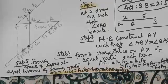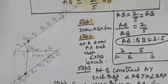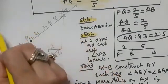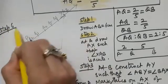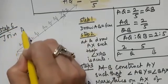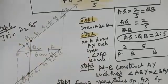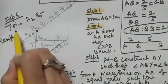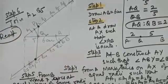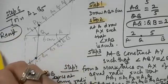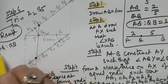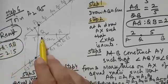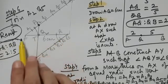Step 6: join A2 and B5 and locate the point Q. Result: Q is a point on AB such that AQ to QB is 2 to 5.